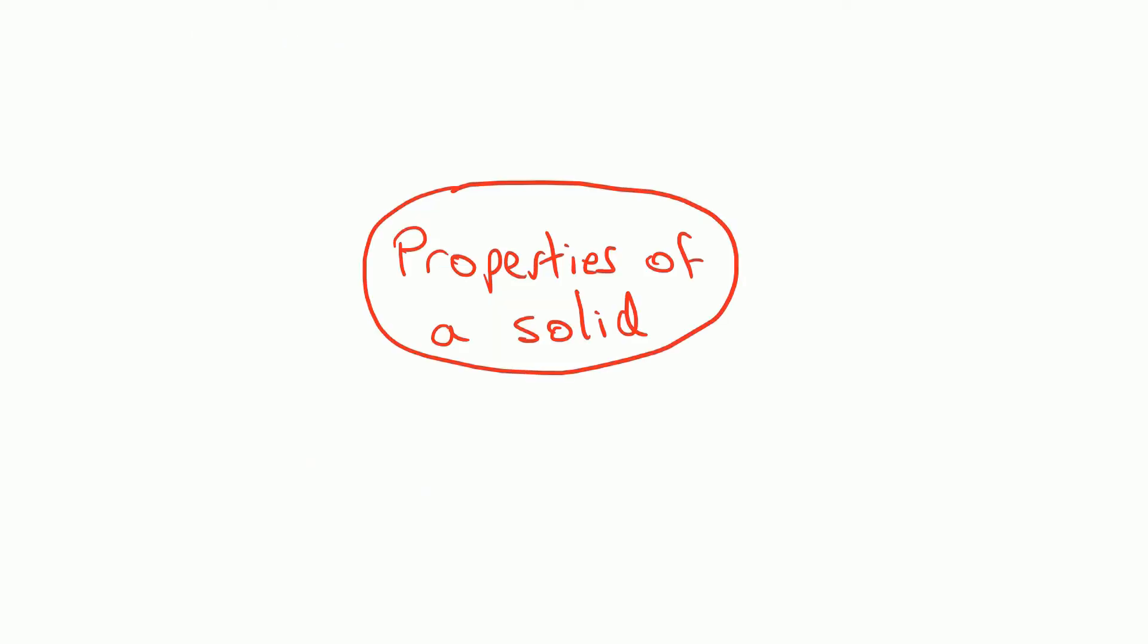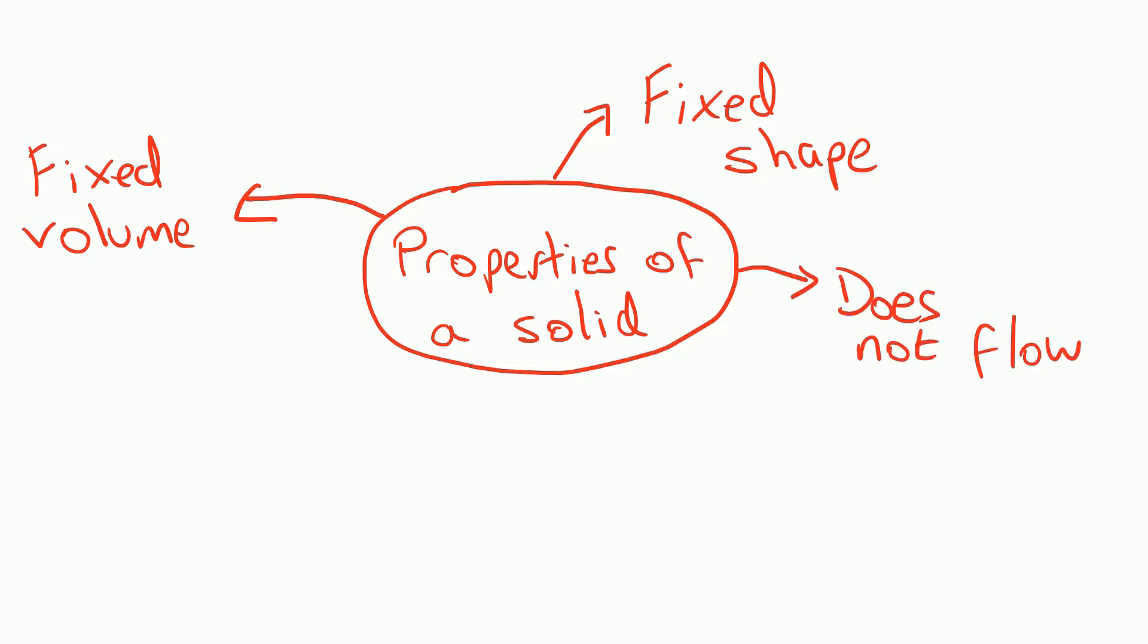In terms of the properties of the solid, what can we say about a solid? Well, they have a fixed shape so the shape doesn't change. They also have a fixed volume. They do not flow from place to place, and you cannot compress a solid because the particles are already as close together as they can be.